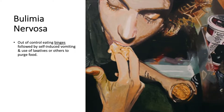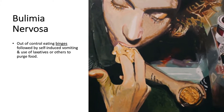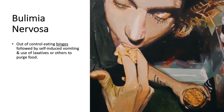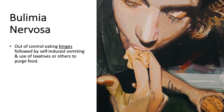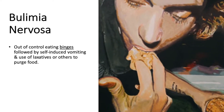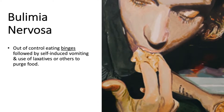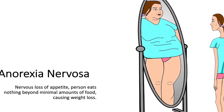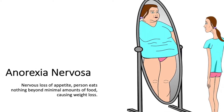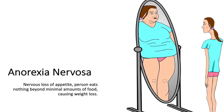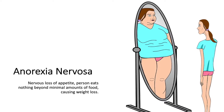To begin with, bulimia nervosa is when individuals are out of control and binge eat, followed by self-induced vomiting and the use of laxatives or other ways to purge food. Anorexia nervosa is the nervous loss of appetite, where individuals eat nothing beyond minimal amounts of food, causing weight loss.